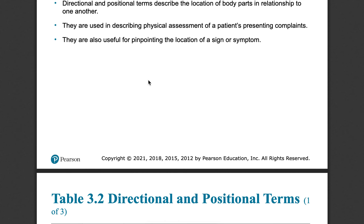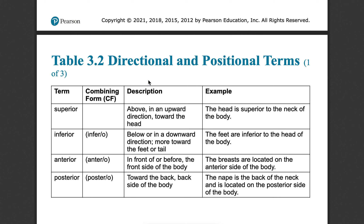Anatomical position matters when talking about location and positioning. This chapter covers directional and positional terms like superior and inferior, meaning above or below. For example, anterior means in front of or before — in anatomical position, your palms are anterior to your hand, while the back of your hand is posterior to the palm.